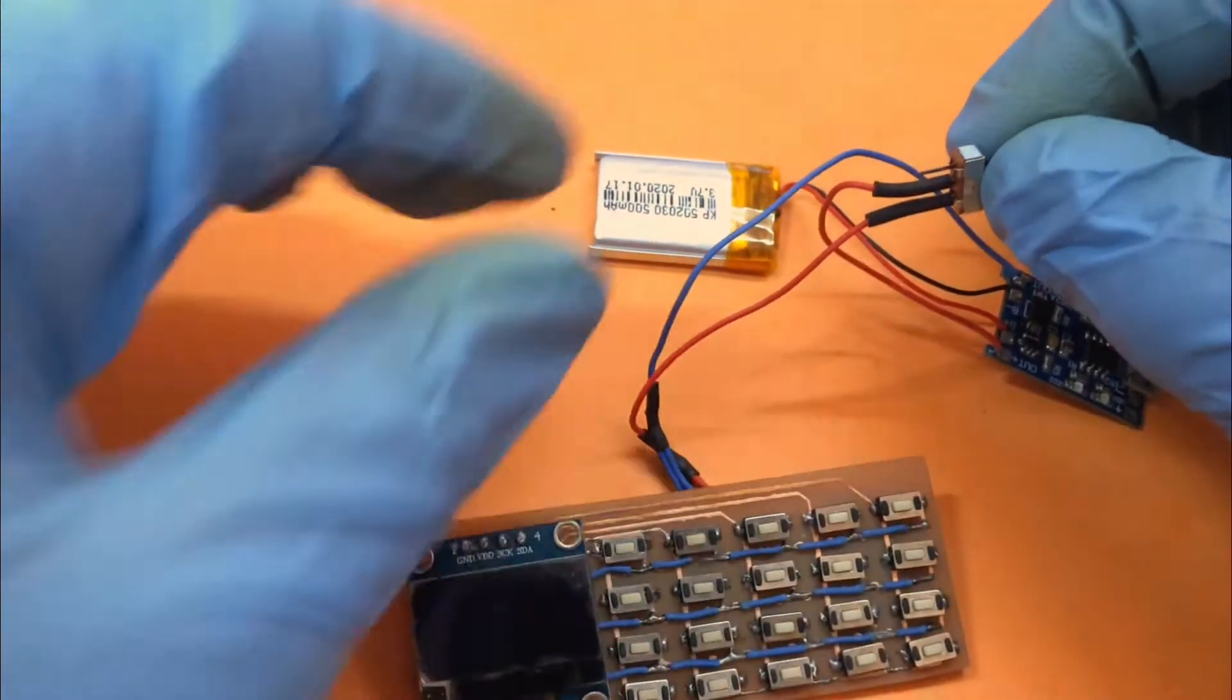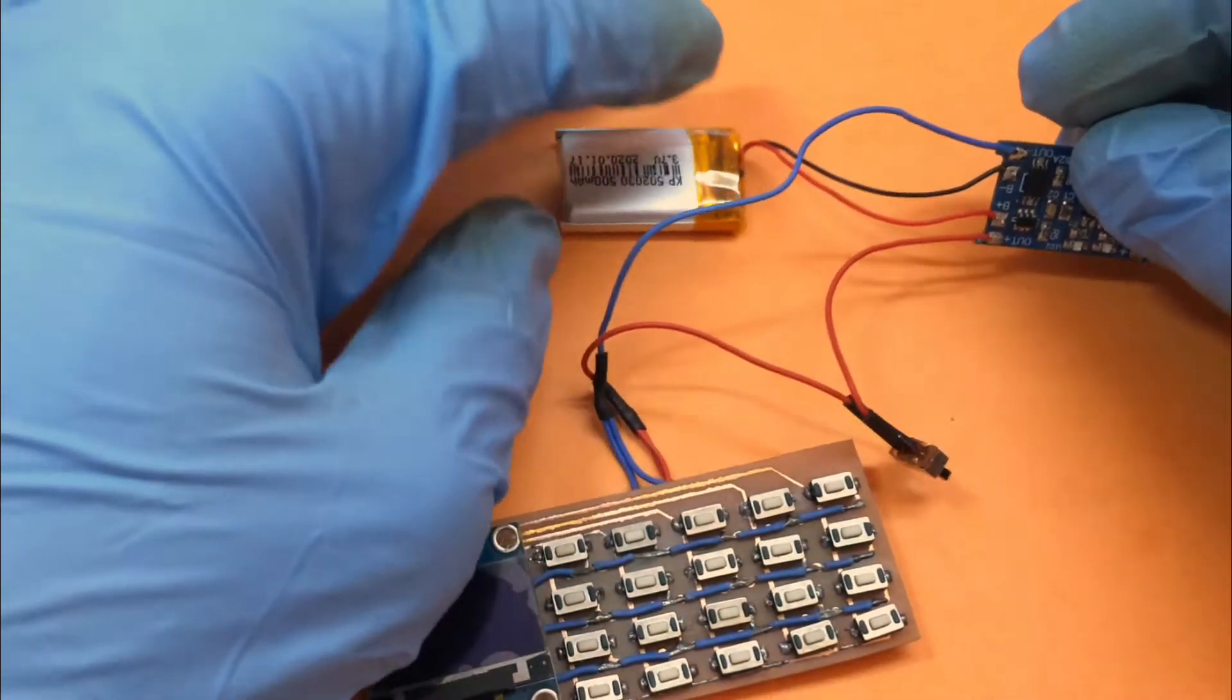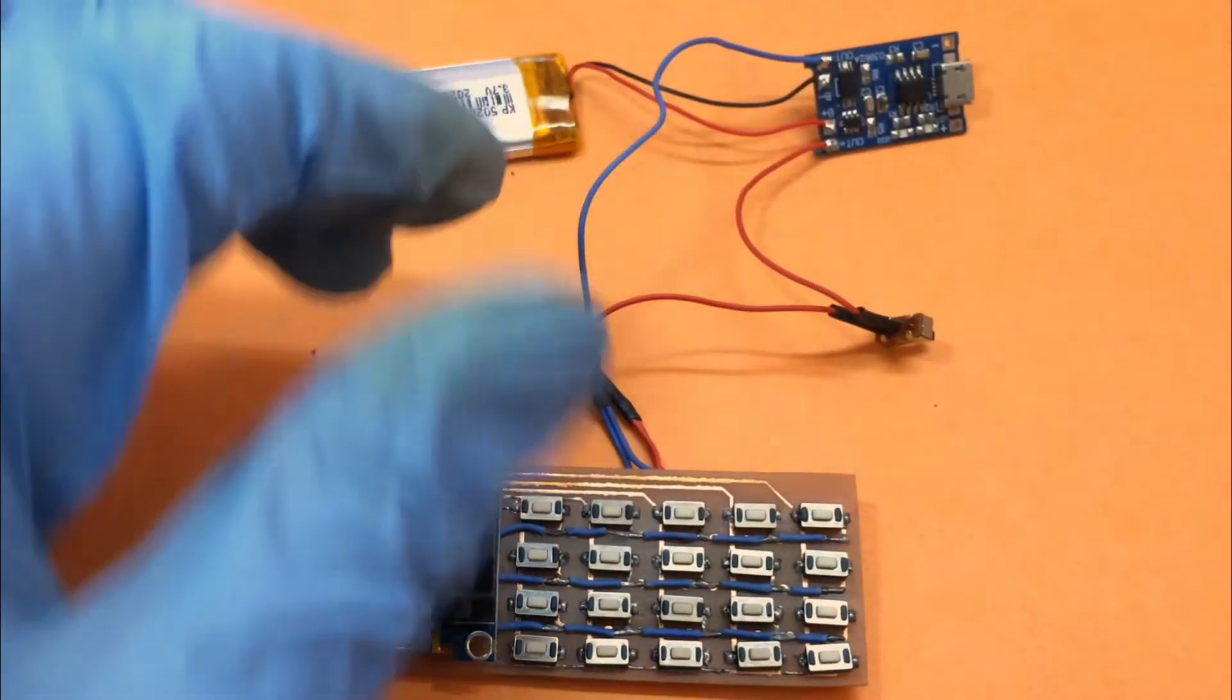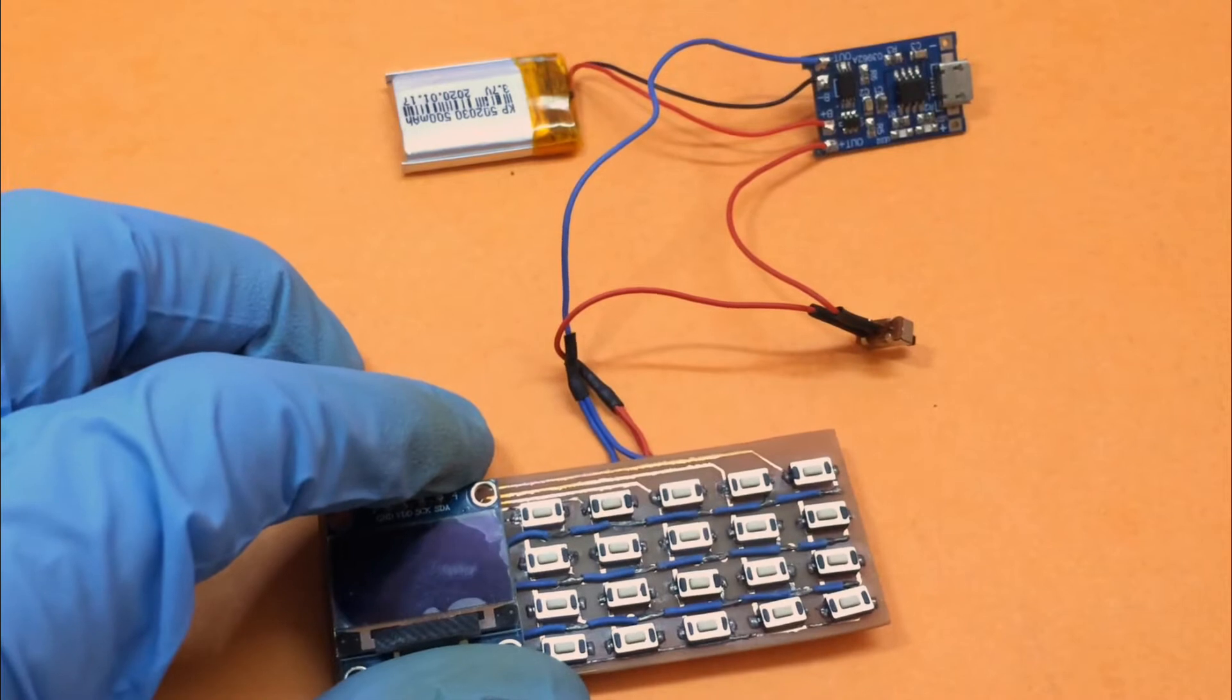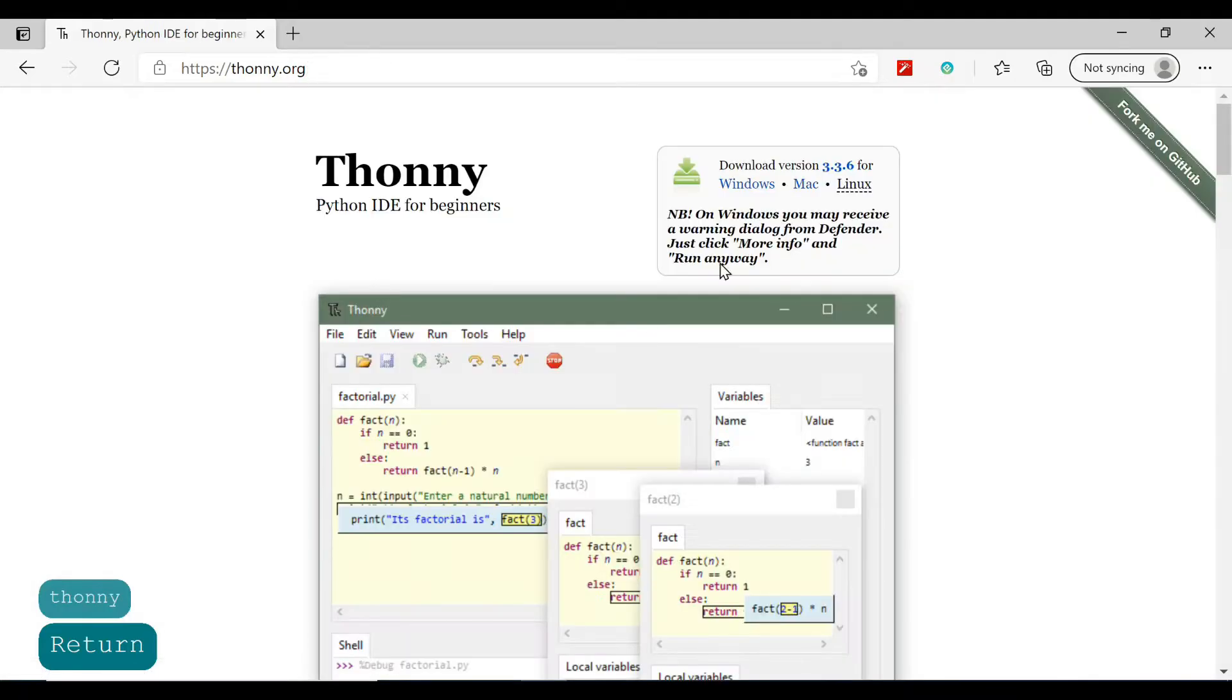I have also attached the LiPo battery and the charge circuitry with an on off switch. And now it's time to program our Raspberry Pi Pico. And for that we will be going to use MicroPython through Thonny IDE. It is pretty simple to install and I have provided the link below to download it.